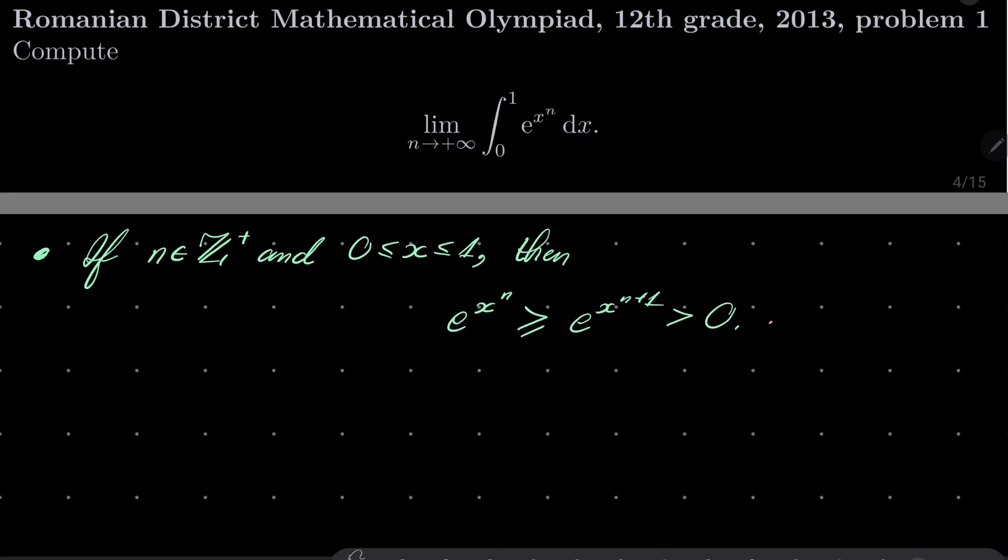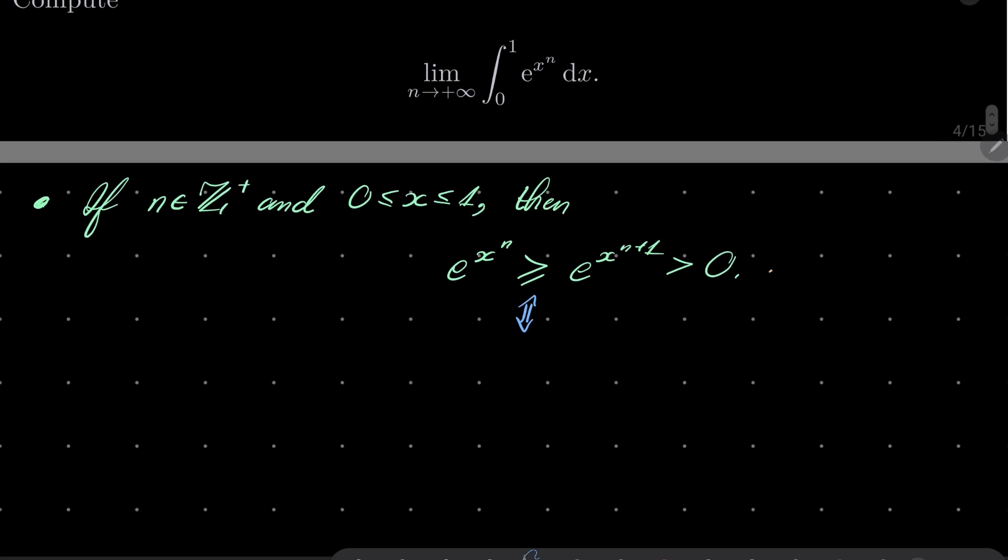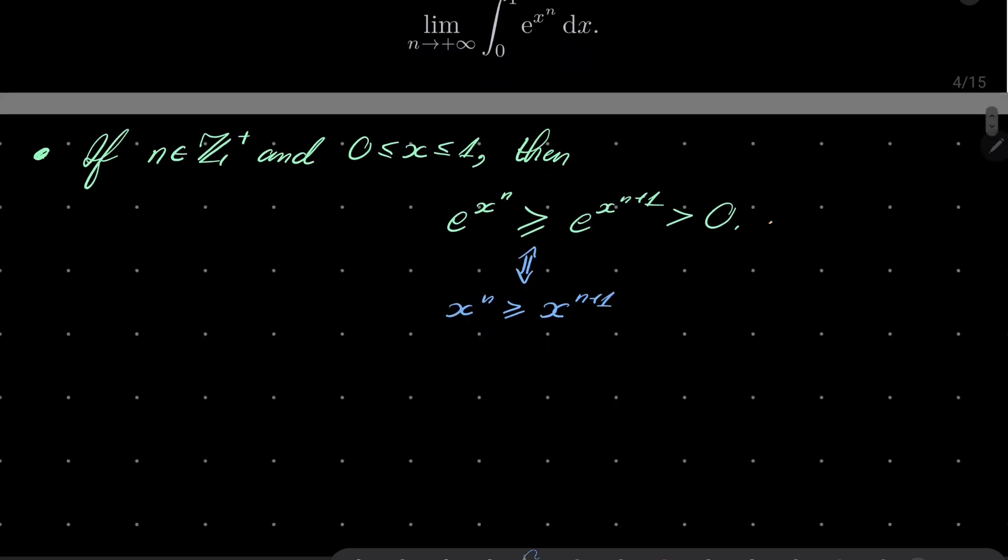Let's justify the first inequality. Notice that the first inequality is equivalent, after taking natural log on both sides, to saying that x to the power of n is greater than or equal x to the power of n plus 1, and this is equivalent, in turn, to saying that x to the power of n times (1 minus x) is greater than or equal to 0, which is true, because x is between 0 and 1.